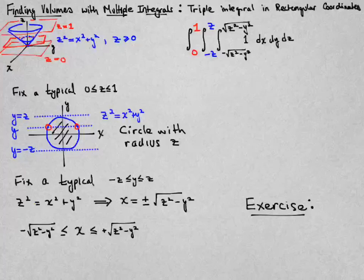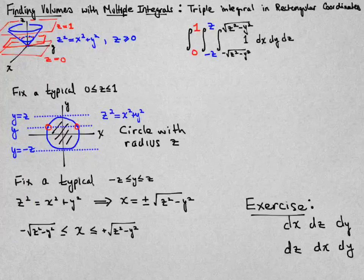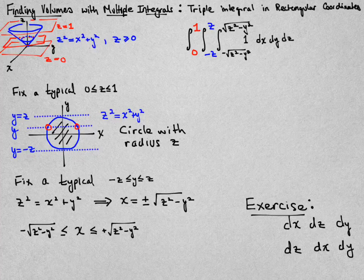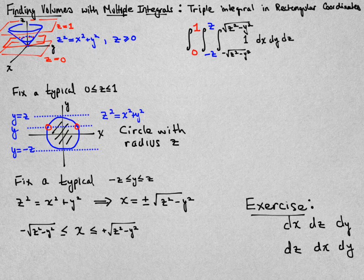As an exercise, you might try doing it in a different order of integration. You might try doing dx, dz, and dy, or dz, dx, and dy. And I think it would be a good way to see whether or not you understood how we did this calculation.